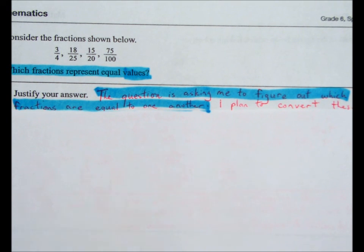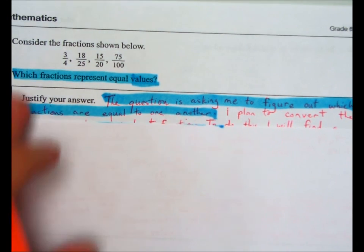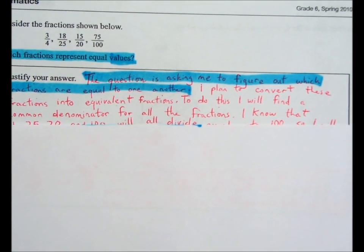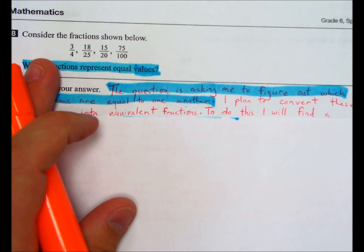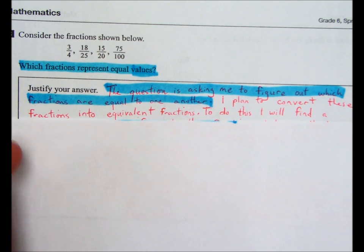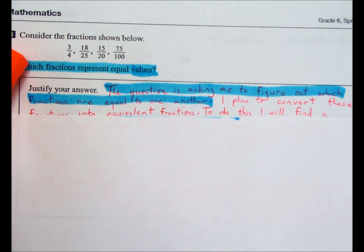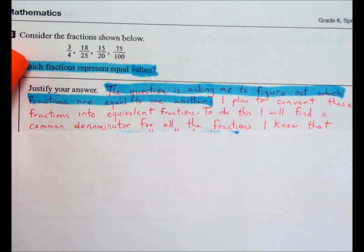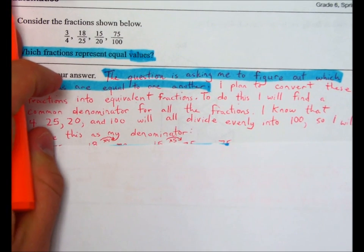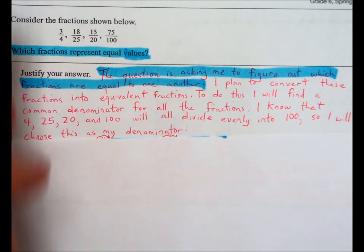And now we're going to take a look at my plan. So that was step one. Not too bad. Step two, I'm going to outline in orange. So my plan is to convert these fractions into equivalent fractions. Because the question is asking me which fractions represent equal values, I need to find a way of comparing them, finding out which ones are equivalent. So I plan to convert these fractions into equivalent fractions. And to do this, I will find a common denominator for all the fractions. I know that 4, 25, 20, and 100 will all divide evenly into 100.